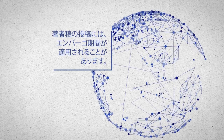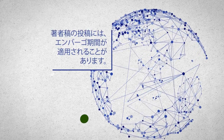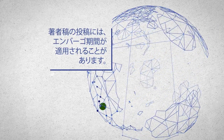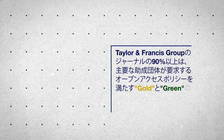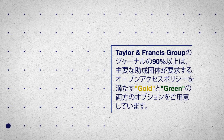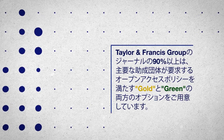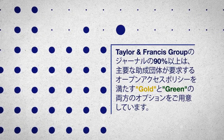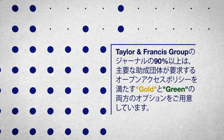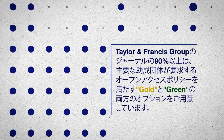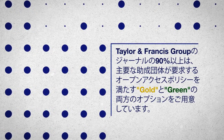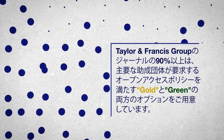Often embargo periods apply to posting of the author accepted version. Over 90% of Taylor & Francis Group journals offer authors the choice of both gold and green options which comply with the open access policies of major funders.